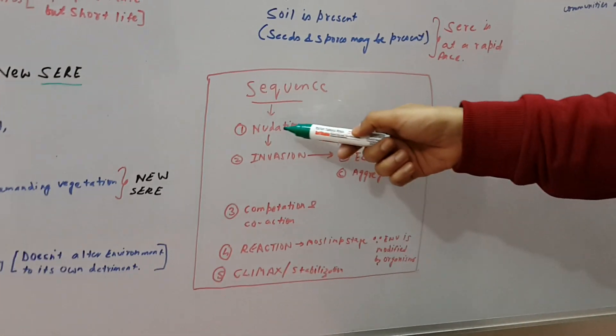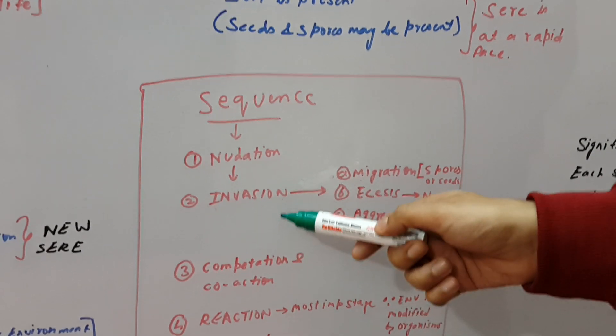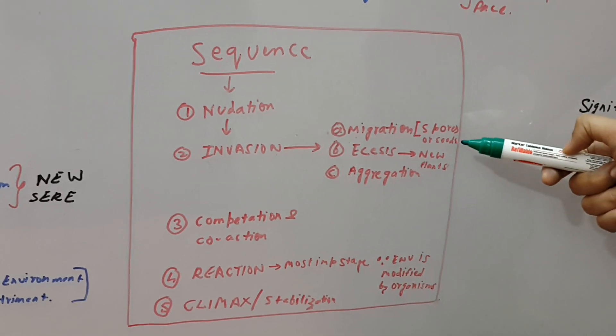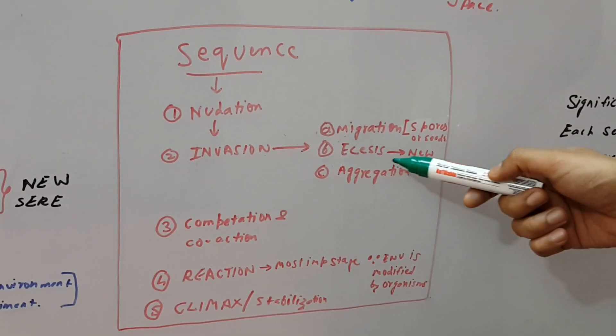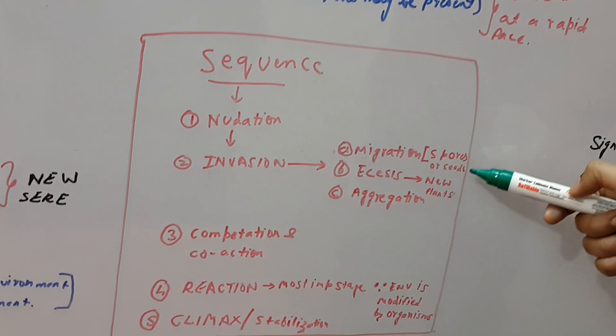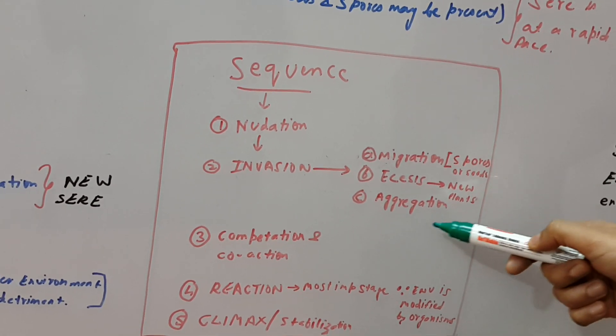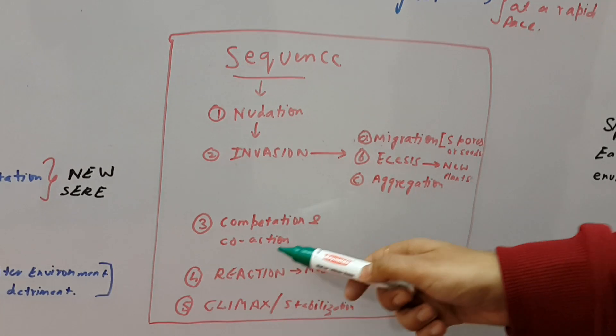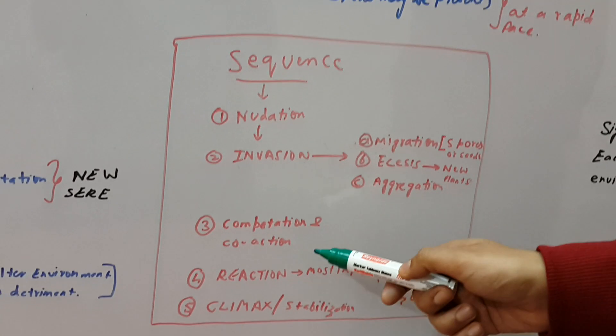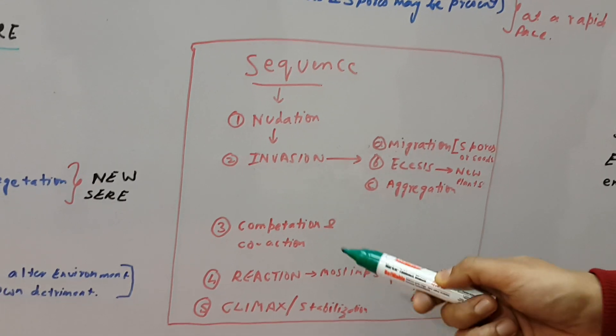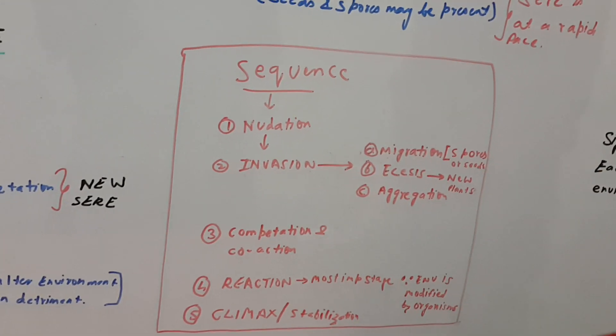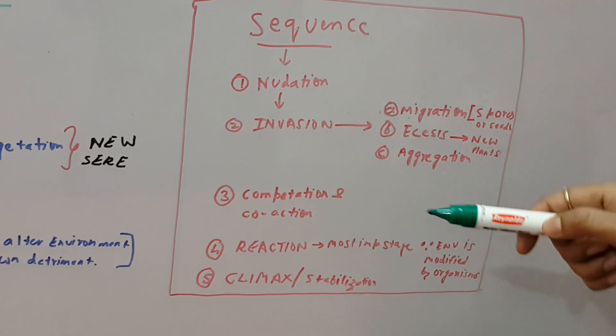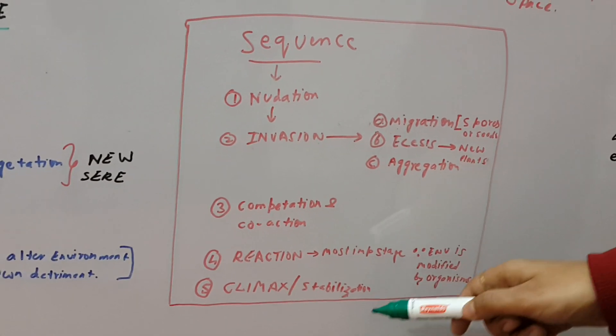Now I would also like to throw some advice on the sequence which occurs in succession. First stage is called nudation, which means the area is bare barren. Then the second stage is called invasion. It has some sub-stages like migration—for example, the spores and seeds of plants come here. Then we have a stage called ecesis, which means establishment of new plants, which happens because of spores and seeds. Then we have a stage called aggregation, which means increase in the population. Then we have a third stage called competition and coaction, which means that there will be competition which can be inter and intraspecies—that is, within the species and also with other species. Reaction is the most important stage because here the environment is modified because of the organisms, and ultimately we will have the climax.